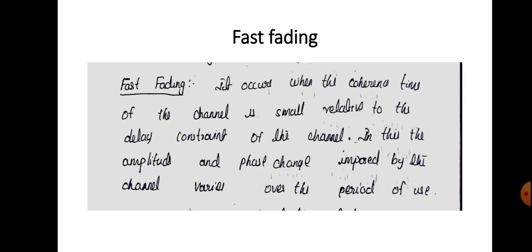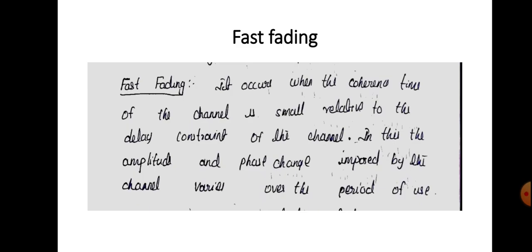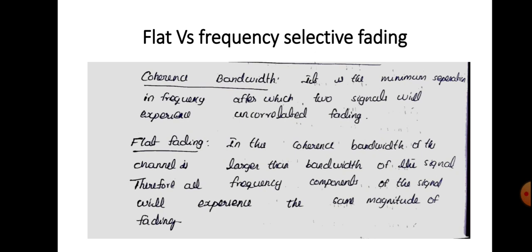Fast fading occurs when the coherence time of the channel is small relative to the delay constraint of the channel. In the case of slow fading, coherence time is large, but in fast fading, coherence time is small. In fast fading, the amplitude and phase change imposed by the channel varies over the period of use — meaning there is a fast change in the amplitude and phase of the signal transmitted across the channel.